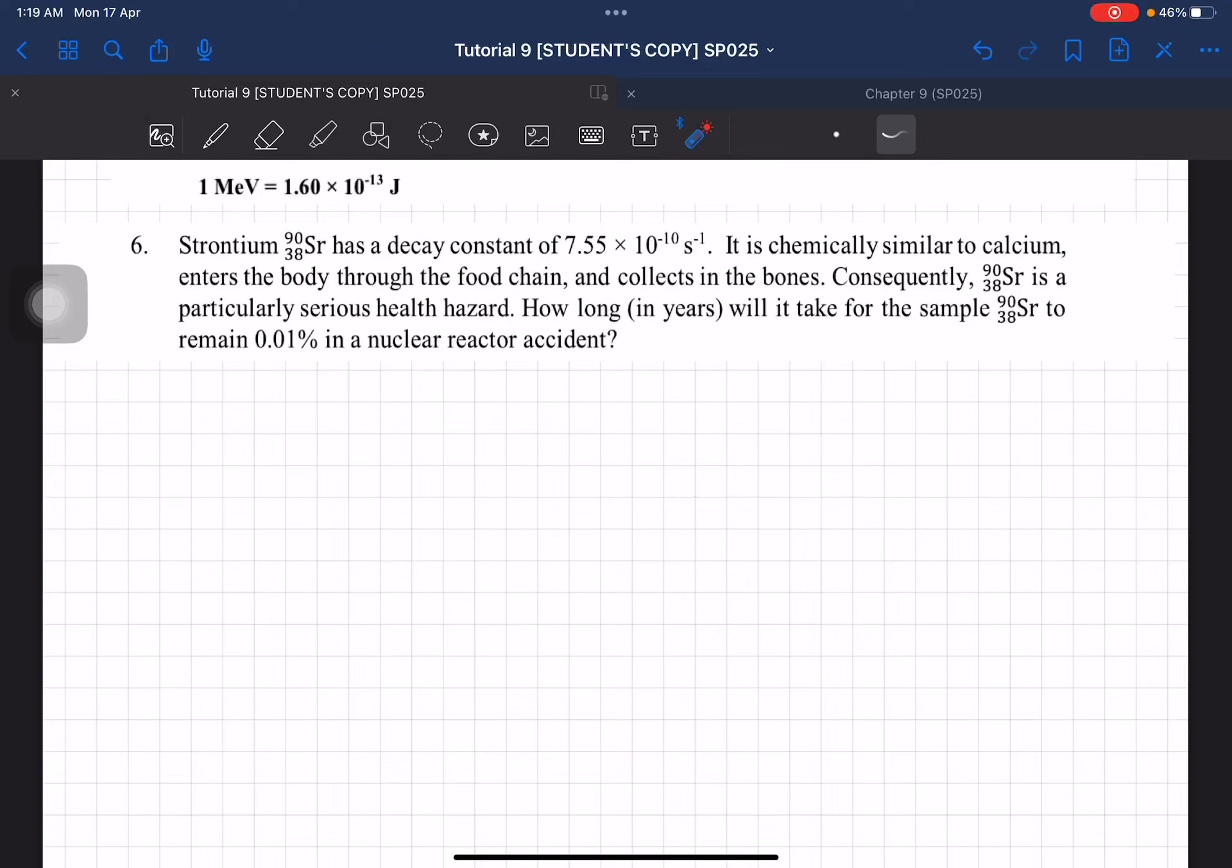Question 6. Strontium-90 has a decay constant of 7.55 times 10 to the negative 10 per second. It is chemically similar to calcium, enters the body through the food chain, and collects in the bones. Consequently, strontium-90 is a particularly serious health hazard. How long will it take for the sample to remain 0.01% in a nuclear reactor accident?